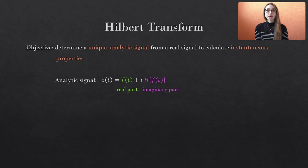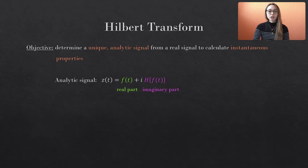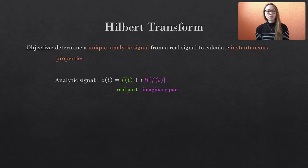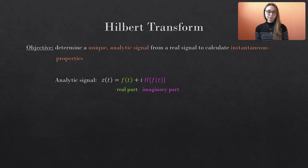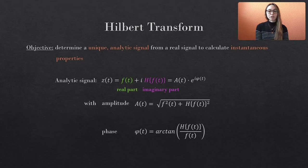Let's briefly review the key aspects of the Hilbert transform and the Hilbert spectrum. The main objective of the Hilbert transform is the calculation of an analytic signal from real-valued data to determine instantaneous properties of the data. The real part of the complex analytic signal is the original real-valued data f(t), and the Hilbert transform provides the imaginary part. When we express the complex signal in polar coordinates, we can extract the amplitude A and the phase phi of the signal.